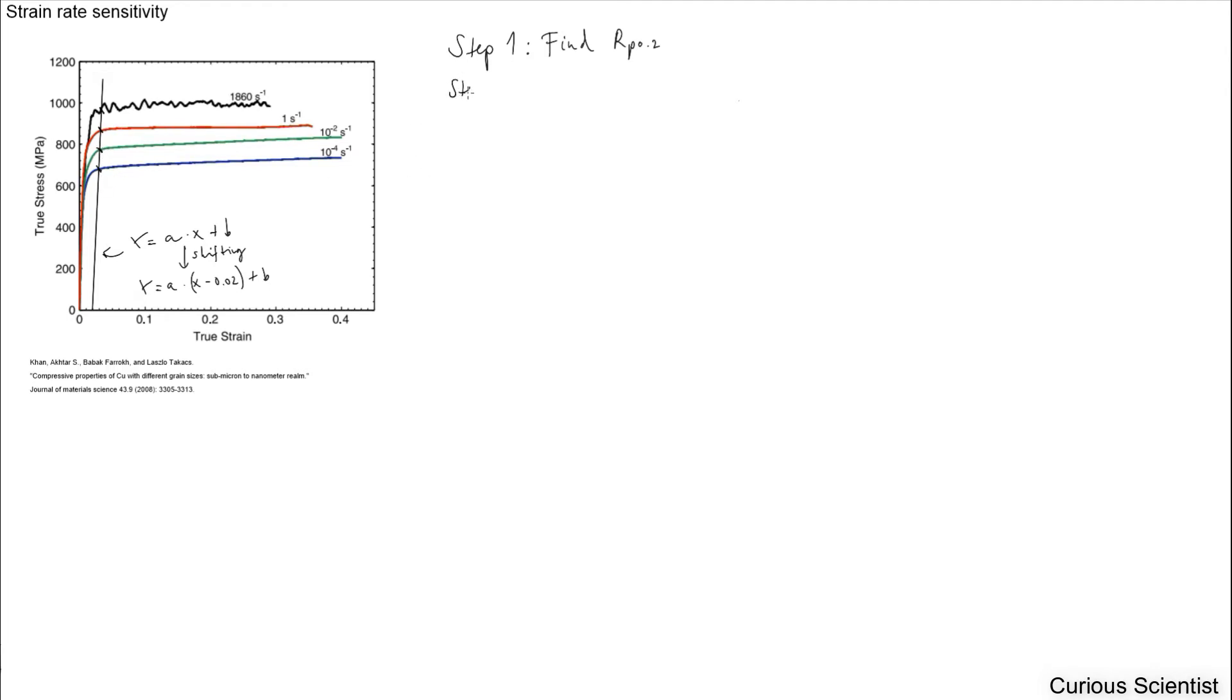So that's step two basically - create a table for the data. Now I just show you what kind of data we need. We have the strain rate, which is one per second, and then we will need to calculate the log of this, the logarithm. So we will note this down.